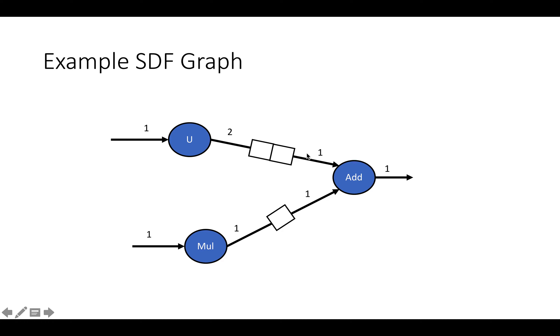Then we have a channel or a FIFO with two slots connecting the upsample to an add. Add is a binary operation that takes in one piece of data on one edge, one piece of data on the other edge, and outputs one piece of data, right, because it's a binary operation.